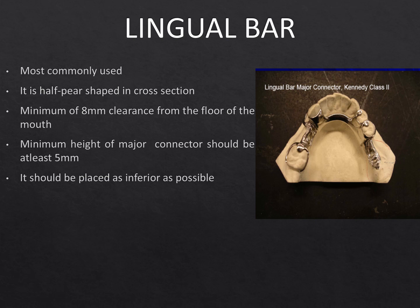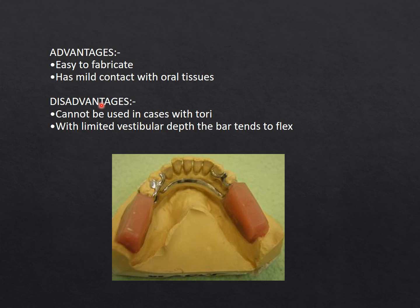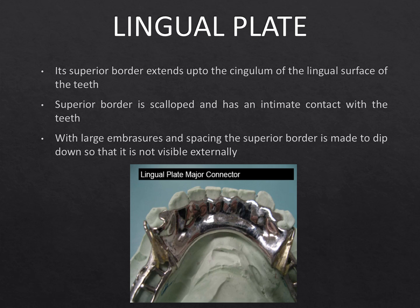Advantages of the lingual bar: it is easy to fabricate using prefabricated wax patterns placed on refractory models. It is the simplest mandibular major connector design, very widely used, has minimum contact with oral tissues, less chance of tissue irritation and food lodgement, and is more comfortable for the patient. Disadvantages: cannot be used with bilateral large inoperable tori, and if the vestibule is too shallow, no type of lingual major connector can be used.